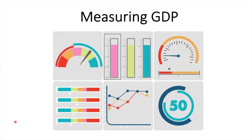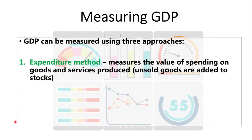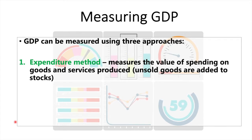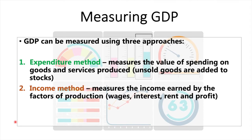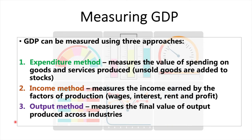GDP can be measured using three approaches. The expenditure method, which measures the value of spending on goods and services produced — unsold goods are added to stocks. The income method, which measures the income earned by the factors of production: wages, interest, rent, and profit. And the output method, which measures the final value of output produced across industries. Essentially, what is spent should equal what is earned, and this should also equal what is produced. Each of these three methods should arrive at the same answer.